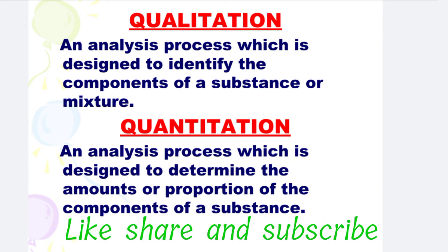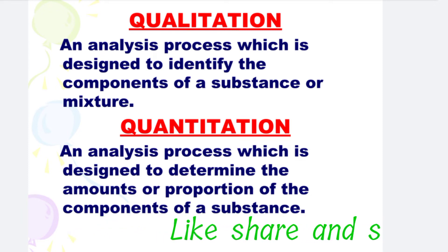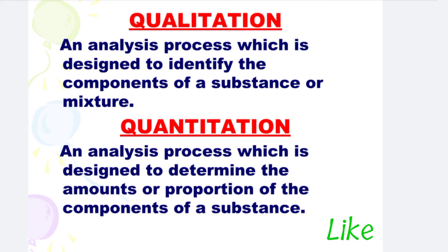Next is Qualitation. Qualitation is an analysis process which is designed to identify the components of a substance or mixture. Next is Quantitation. Quantitation is an analysis process which is designed to determine the amounts or proportion of the components of a substance.